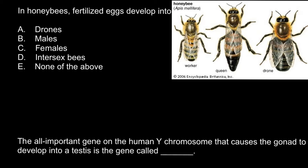Hello and welcome to Nikolai's genetics lessons. Today I have prepared two questions for you. Here is the first question: in honeybees, fertilized eggs develop into — and here are five answers to choose from: A) drones, B) males, C) females, D) intersex bees, and E) none of the above.